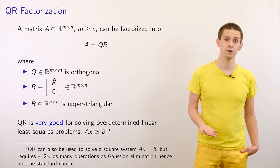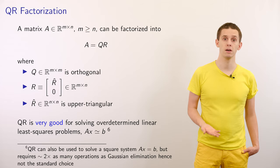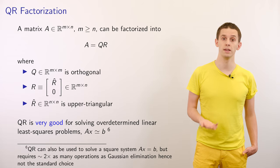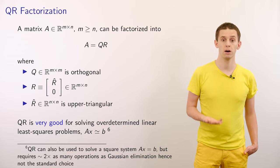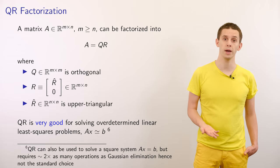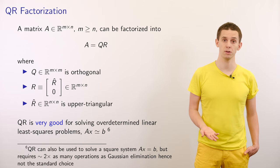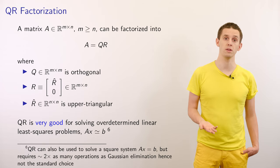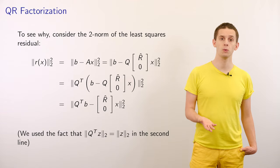However, the QR factorization has other benefits. In particular, as we'll see, it's very good for solving over-determined linear least squares problems of the form Ax equal to B, where now A is a rectangular matrix with more rows than columns.